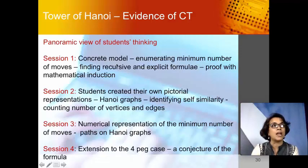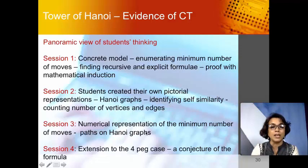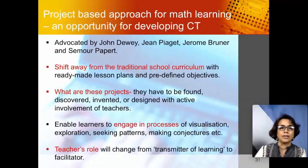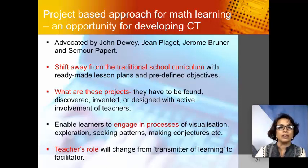By the end of this exploration, a panoramic view of computational thinking was evident. In session one, students used trial and error with a concrete model, enumerated minimum moves, found recursive and explicit formulae, and proved by mathematical induction. Session two involved creating pictorial representations and identifying self-similarity in Hanoi graphs, counting vertices and edges. Session three focused on minimum moves and connected the puzzle to Hanoi graphs through numerical representations. Session four extended the exploration to the four-peg case. Both the grade 9–10 fractal project and the pre-service teachers' Tower of Hanoi exploration showed clear evidence of computational thinking.